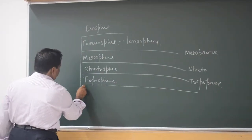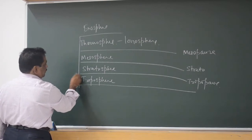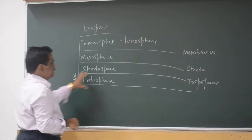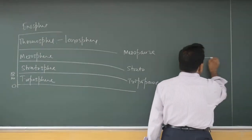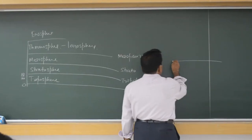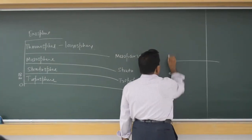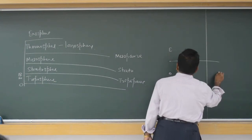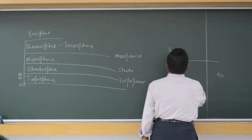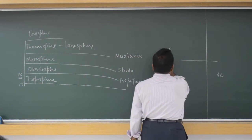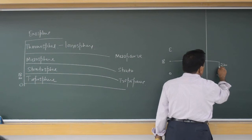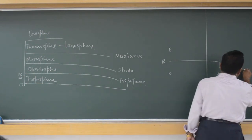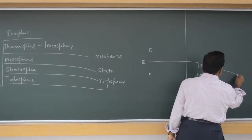The troposphere extends from the surface. How high? Up to 18 kilometers. This layer is not a uniform layer. At the equator it is at a height of 18 kilometers. Then there is a fall of about 2 kilometers, and it comes down gradually to 7 kilometers at the poles.